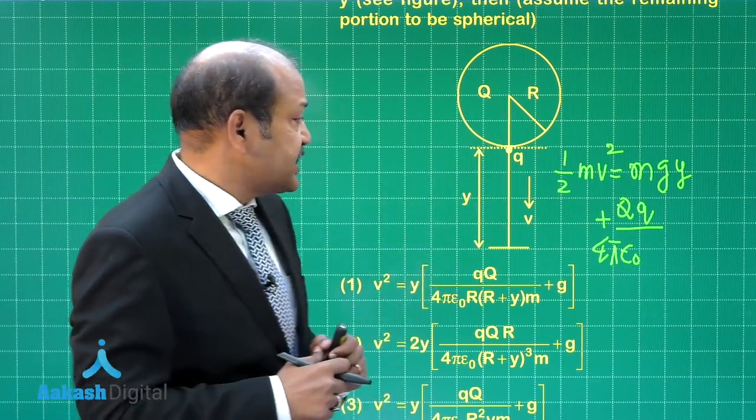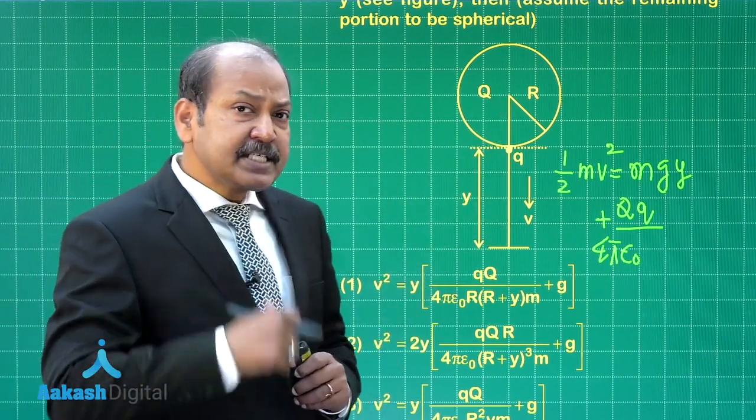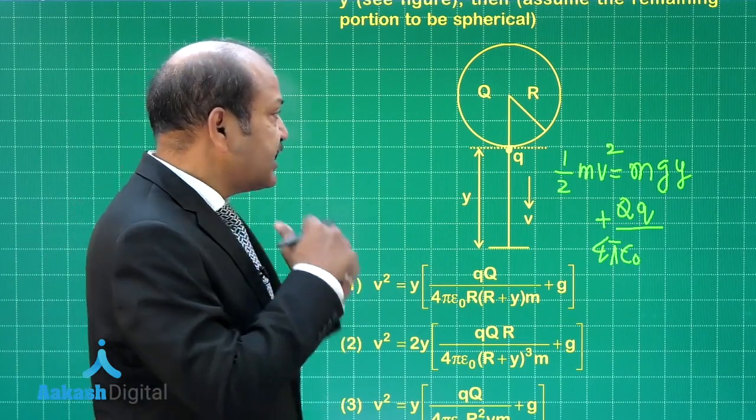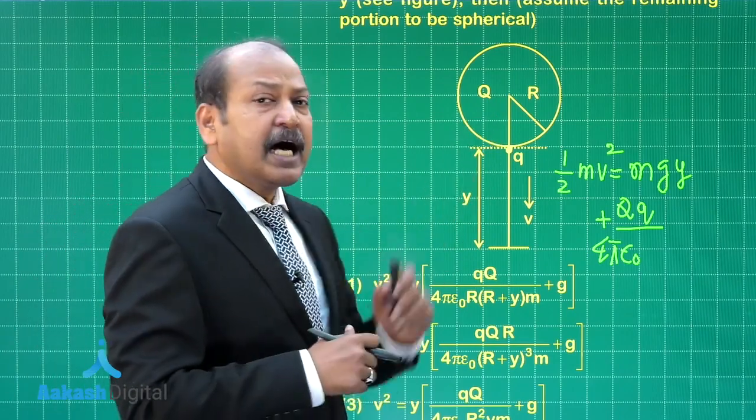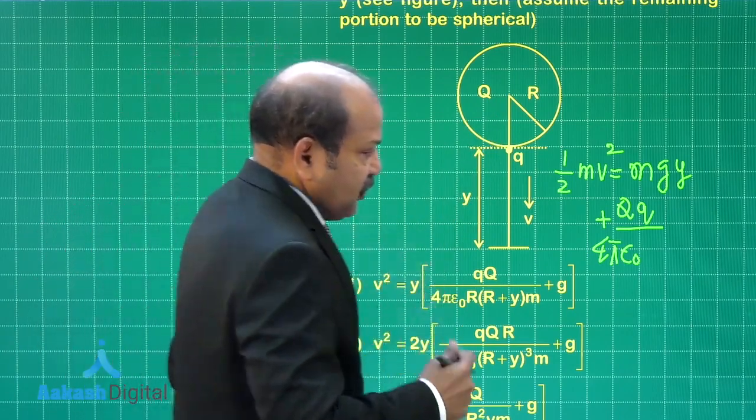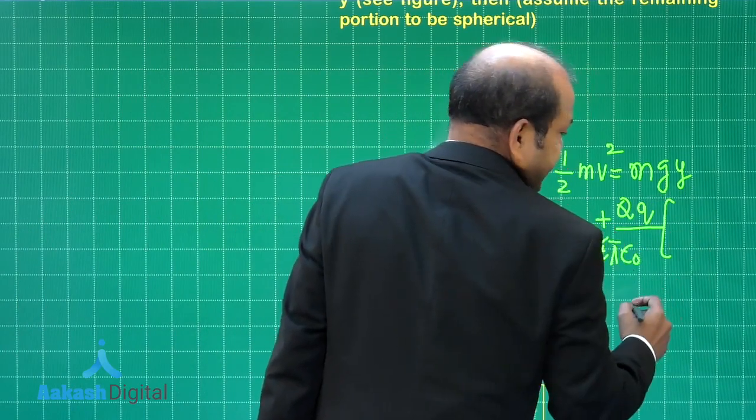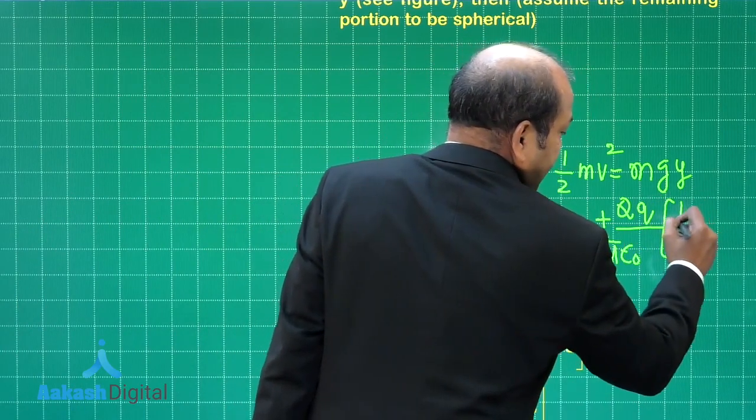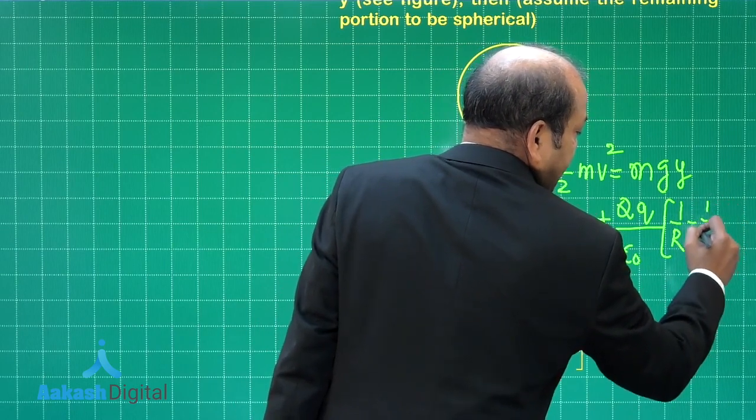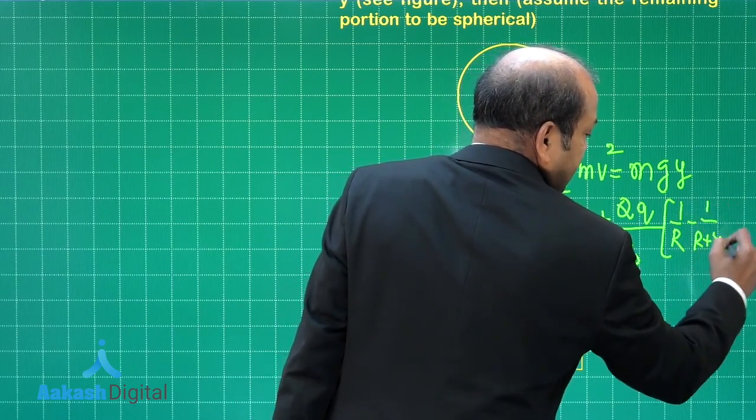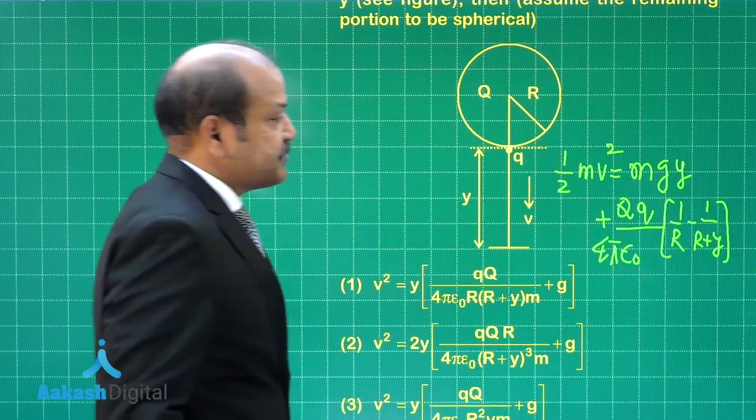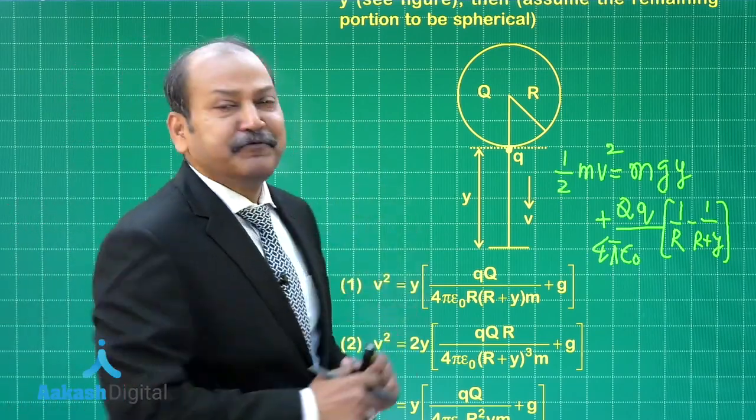The final separation, if you look at the distance from the center, is y plus r, and initially it was r only. So we are getting here within the brackets 1 by r minus 1 by r plus y. This is the expression for v.